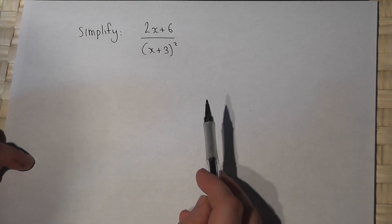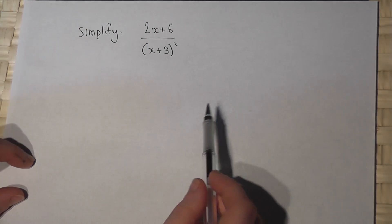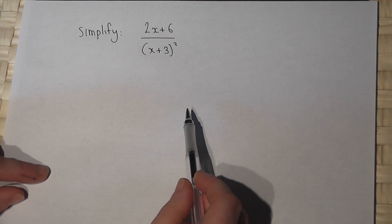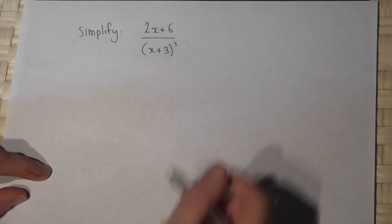This video reviews simplifying an algebraic fraction. The method we use here is to factorize the top and the bottom of the fraction if possible.